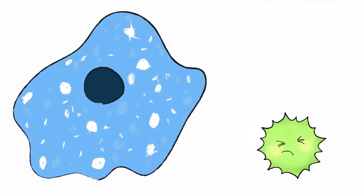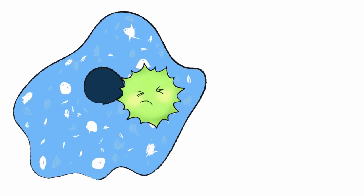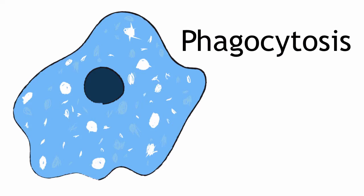Once the macrophages recognize the bacteria, they can then go on to destroy it by eating it. This is a process known as phagocytosis.